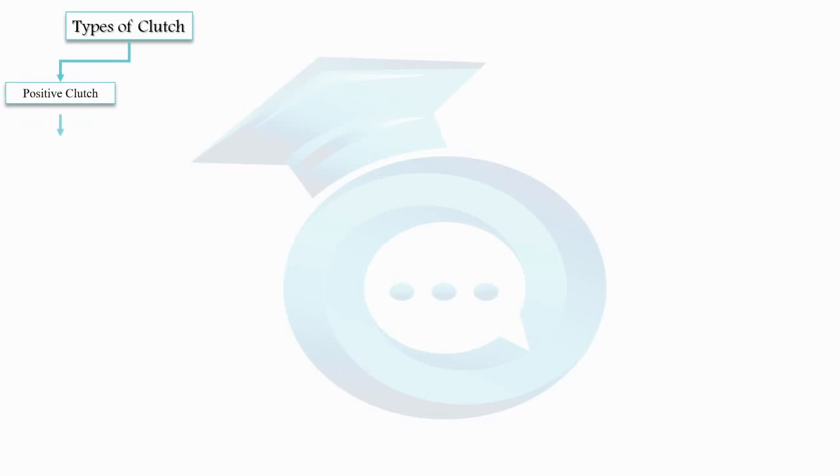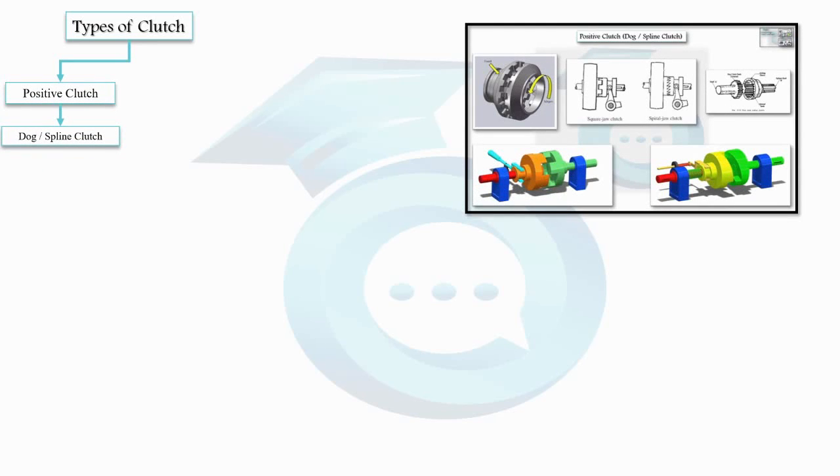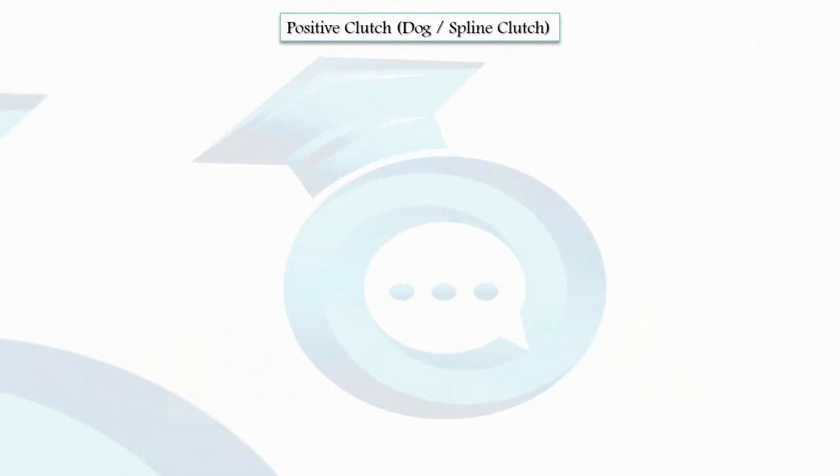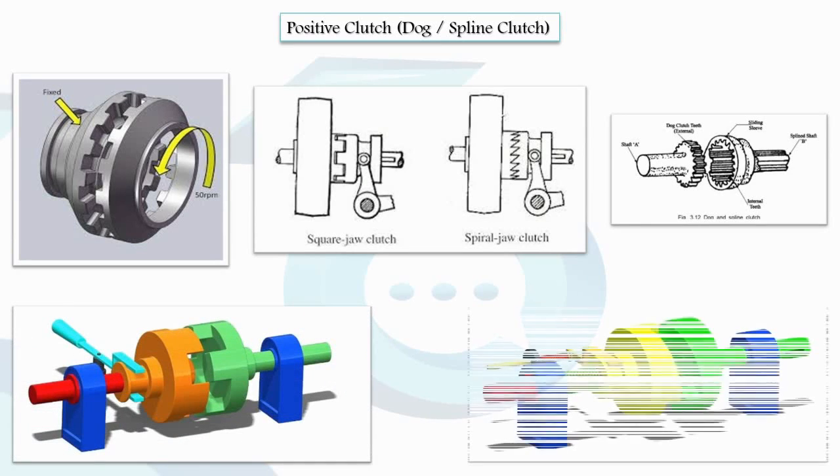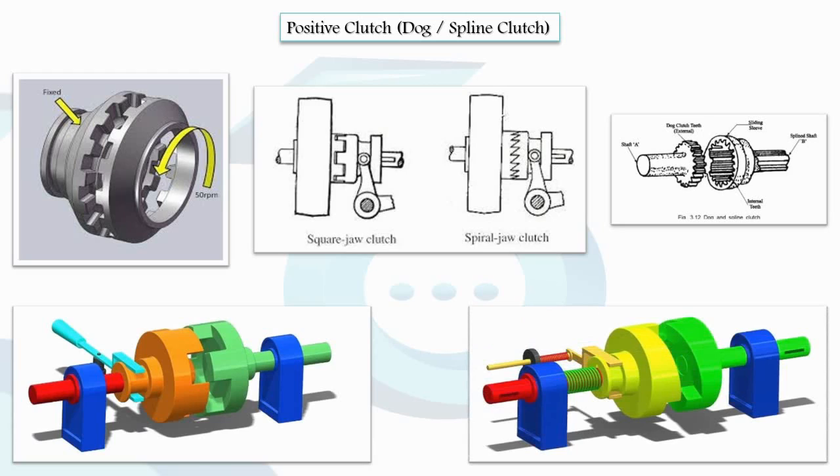One type of clutch is the positive clutch, also known as a dog or spline clutch. This clutch operates without any slip, meaning it can instantly engage or disengage the power transmission. Think of it as an in and out type of clutch, providing a swift connection between gears. However, it may not be suitable in situations where gradual engagement or disengagement is required. You will commonly find this type of clutch in gear boxes where it efficiently connects gears on the same shaft.